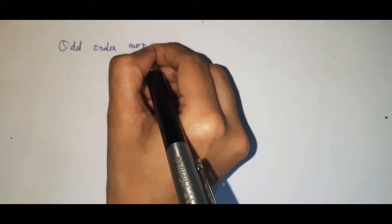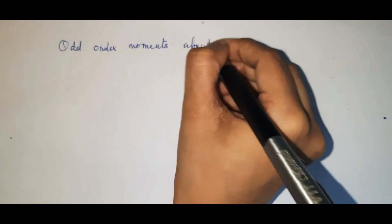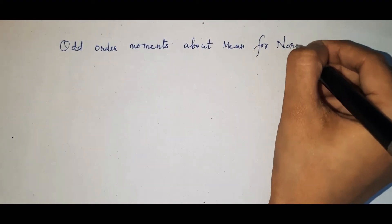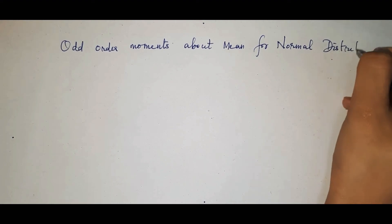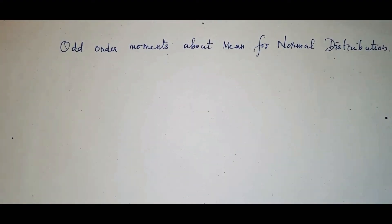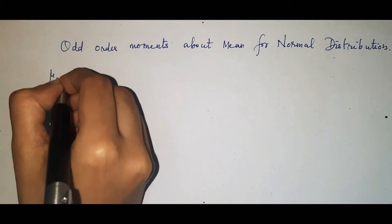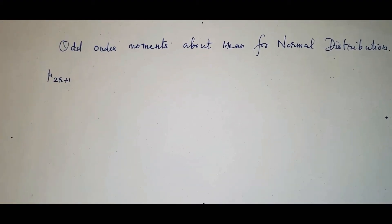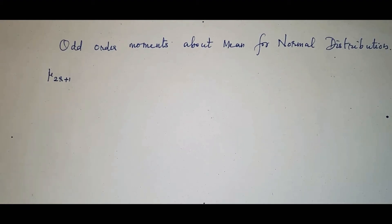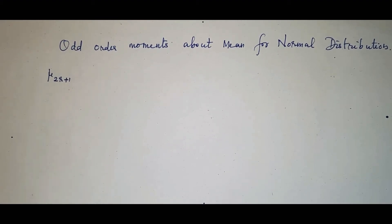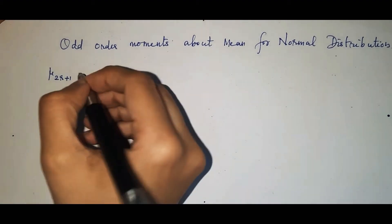In this video, we are going to discuss the odd order moments about the mean for the normal distribution. To denote the odd order moment, we write it as μ₍₂ᵣ₊₁₎. If r is any natural number or whole number, then 2r gives an even number, and adding 1 gives an odd number. That is why we use μ₍₂ᵣ₊₁₎ to denote the odd order moments.